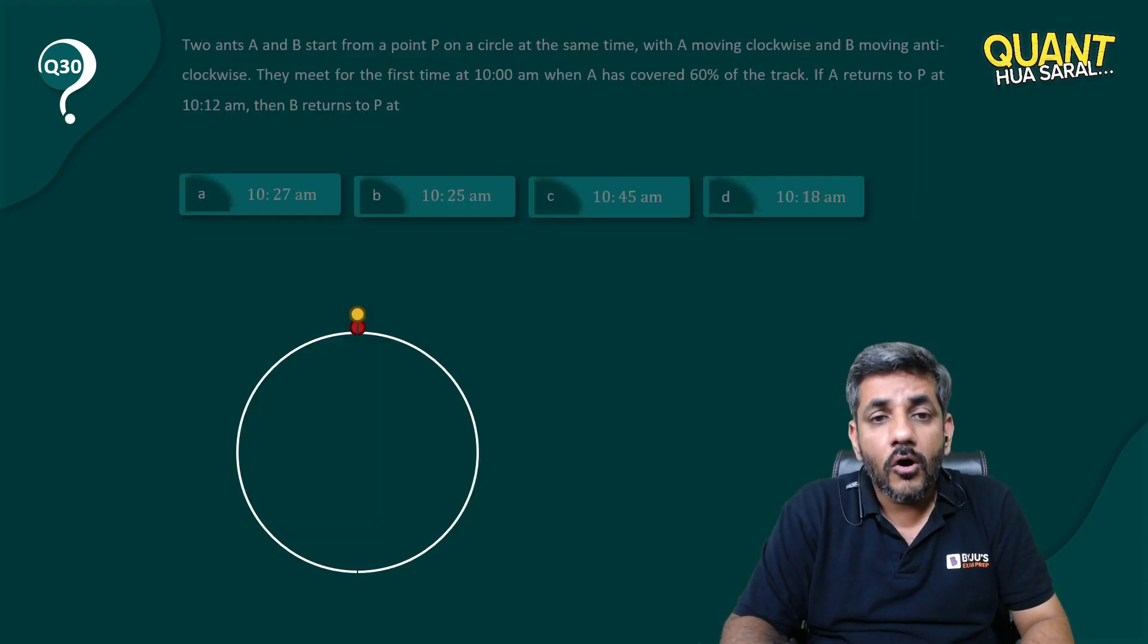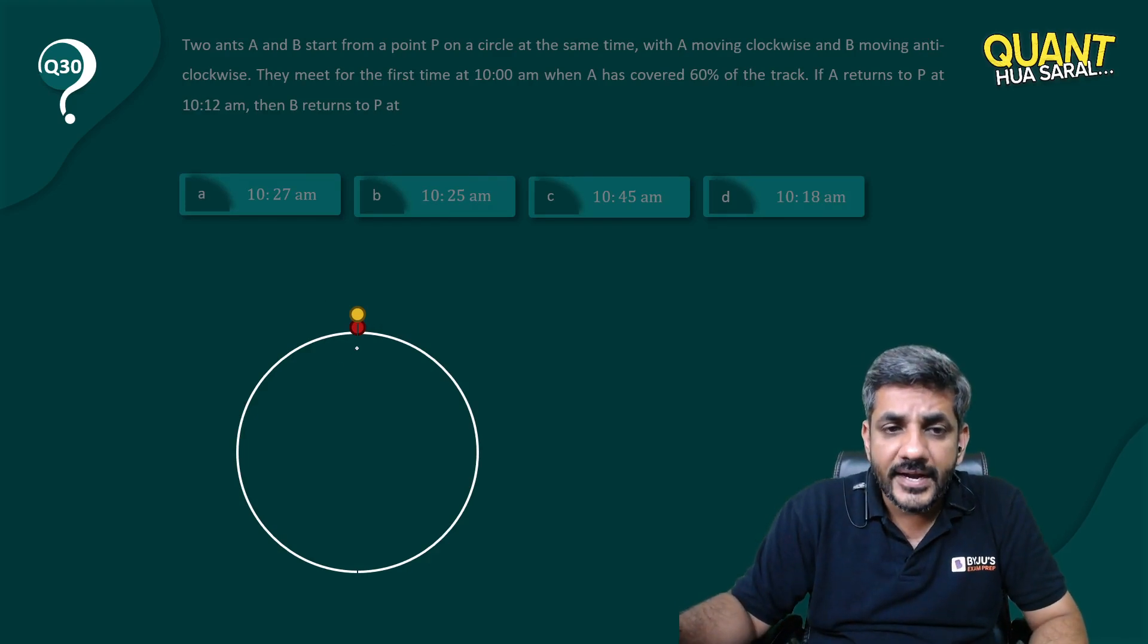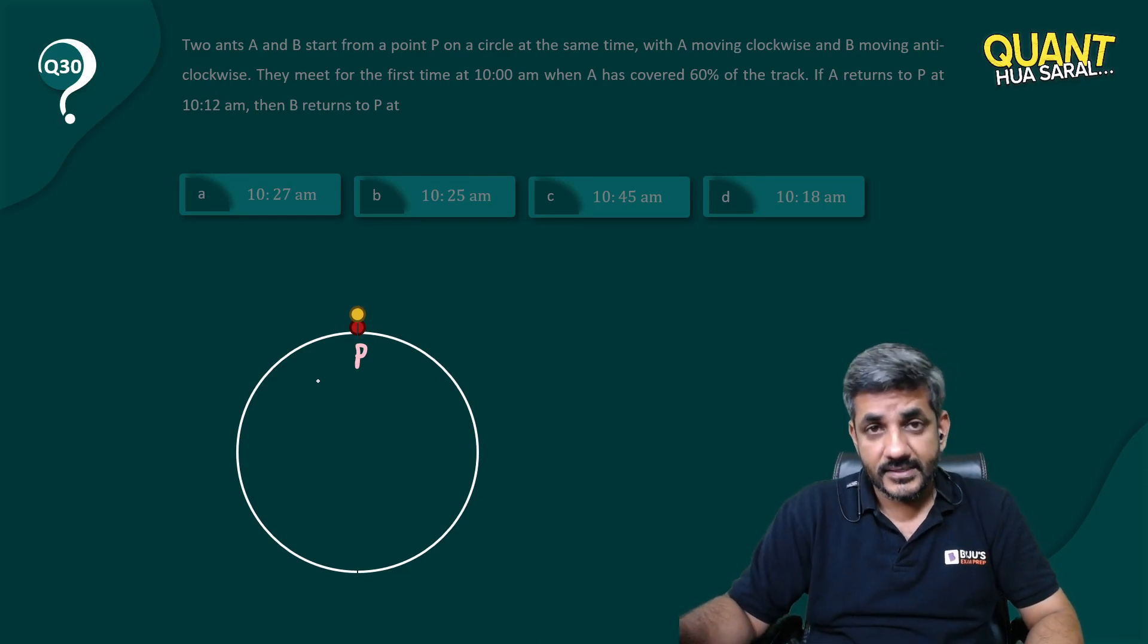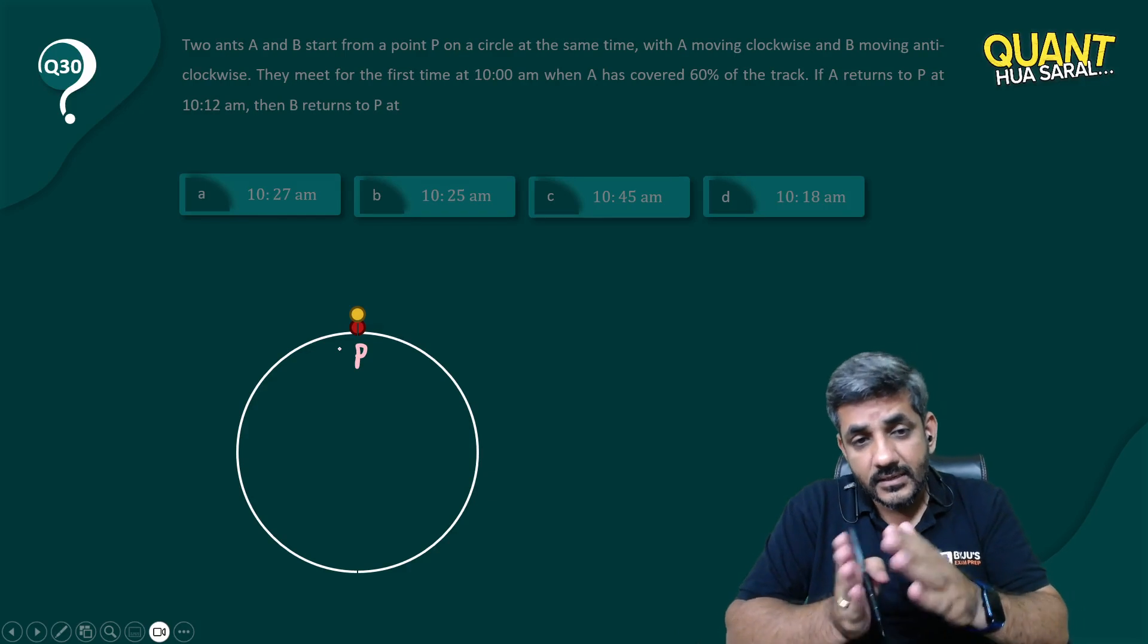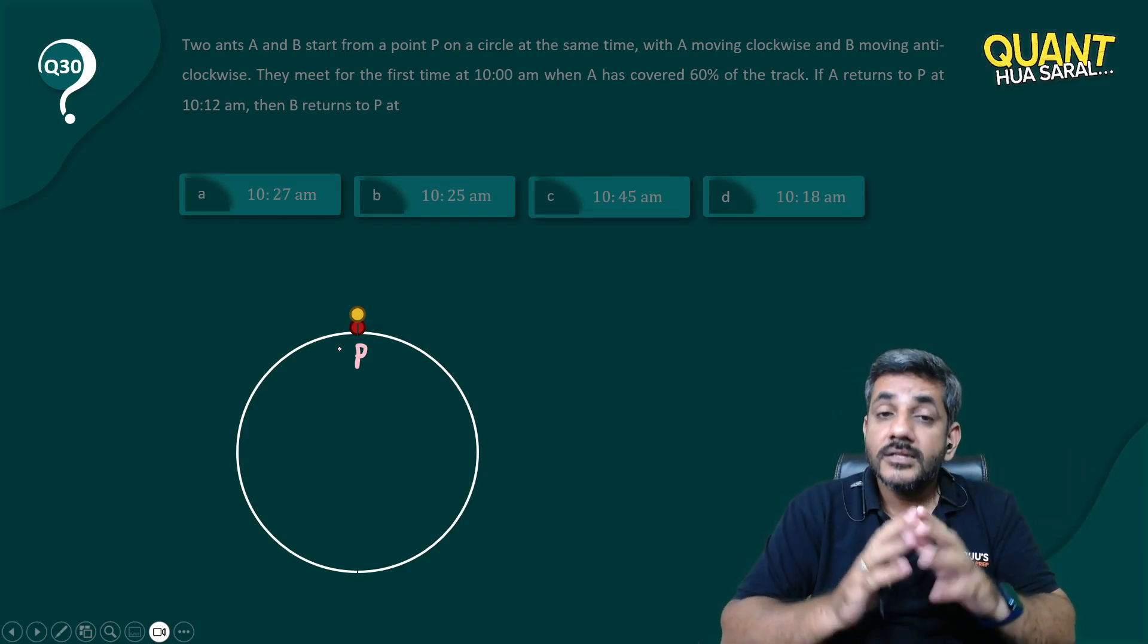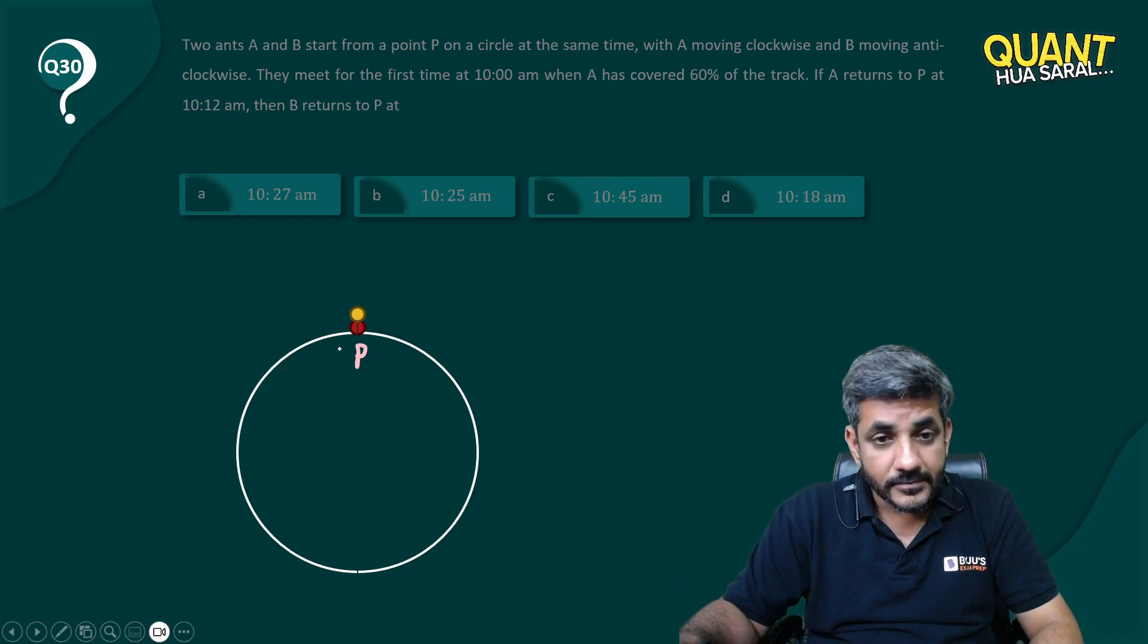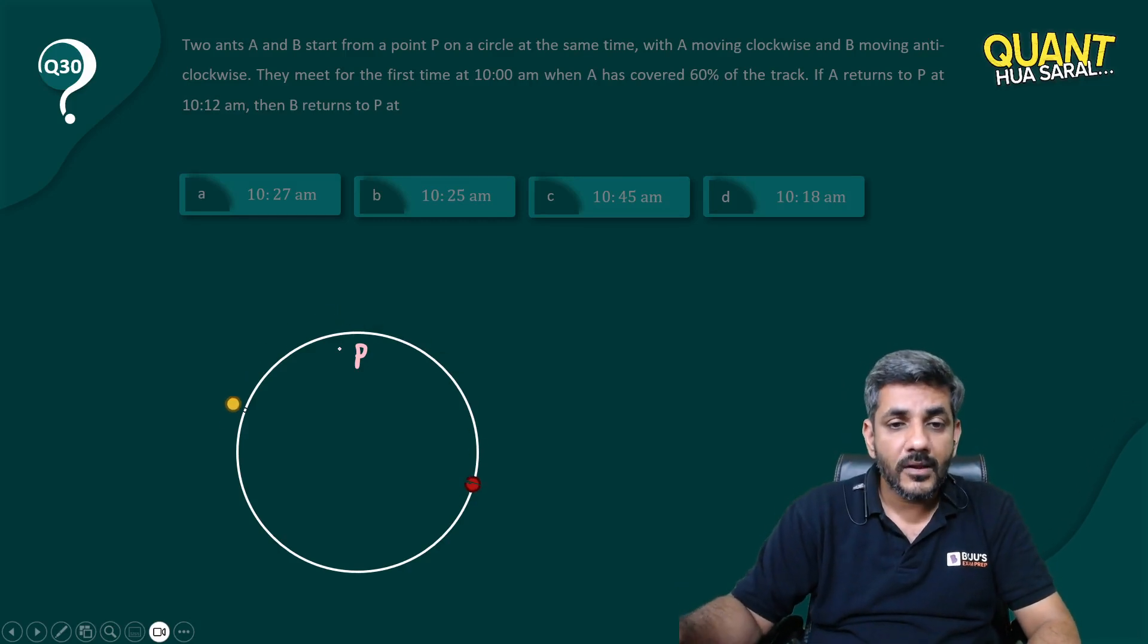What I have done on this next screen - you see a circular track, this is point P. Currently, the red one is ant A, the yellow one is ant B. A is running in clockwise direction and B is running in anti-clockwise direction. They meet at 10 am, so let's have them moving now.